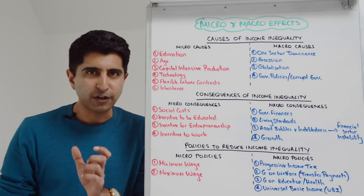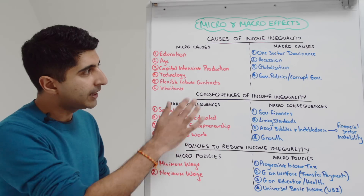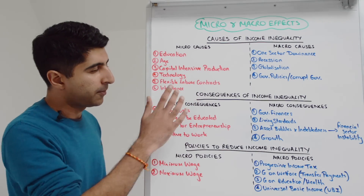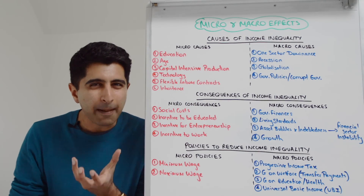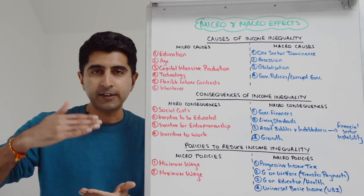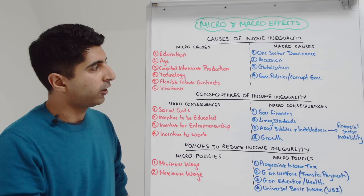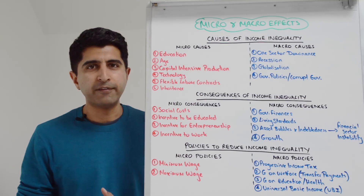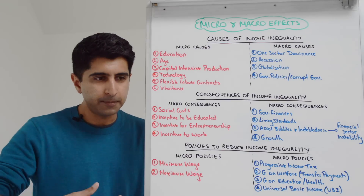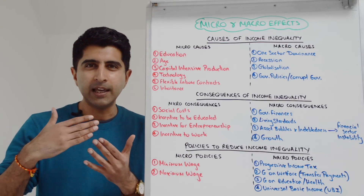These are both very strong demand factors in the labor market. We can also look at the production processes of businesses across the economy — if there is highly capital-intensive production, capital owners see the high income, and there isn't that transfer to workers in the economy.